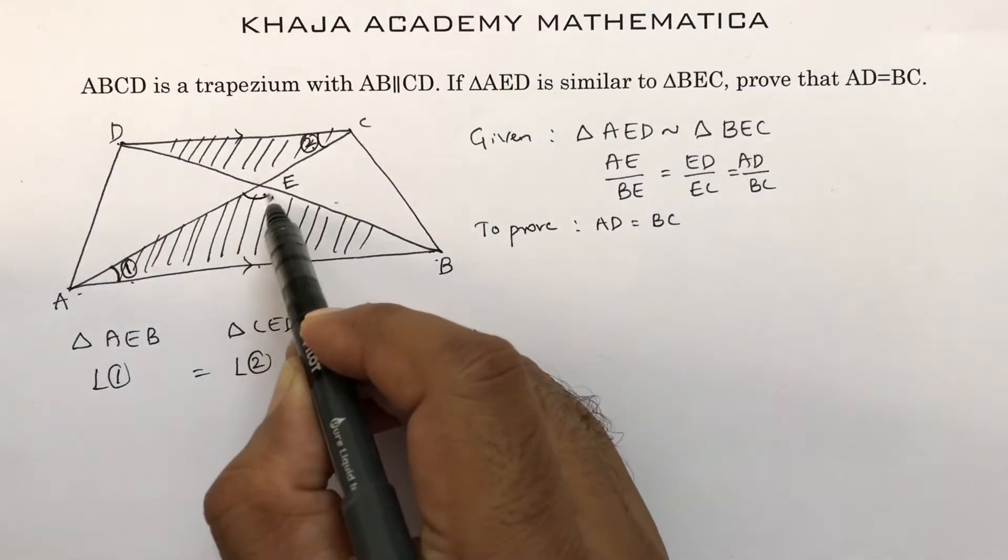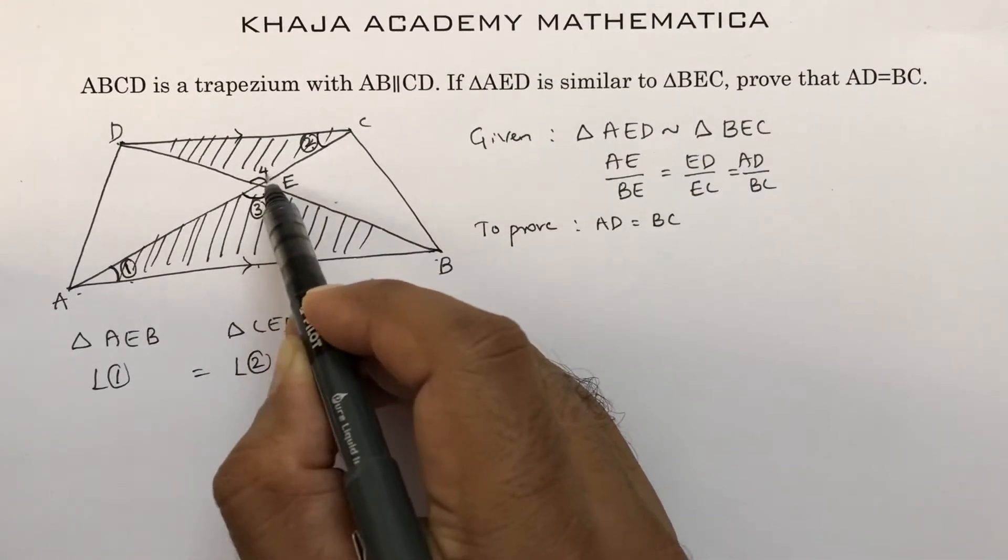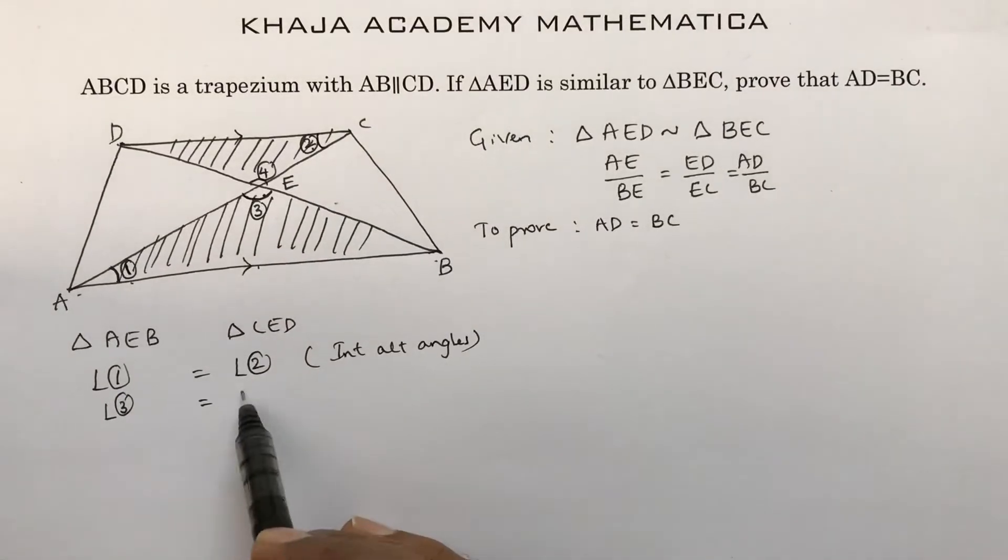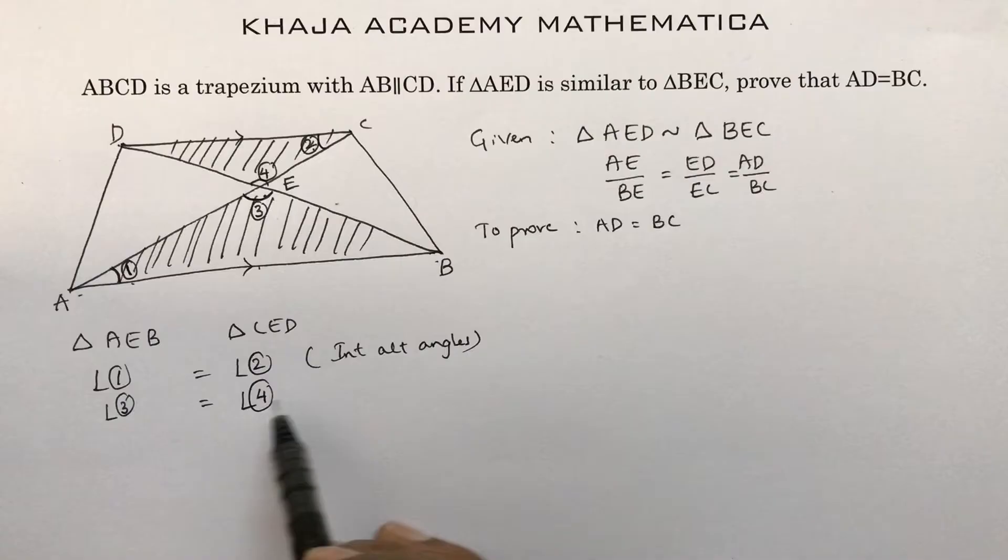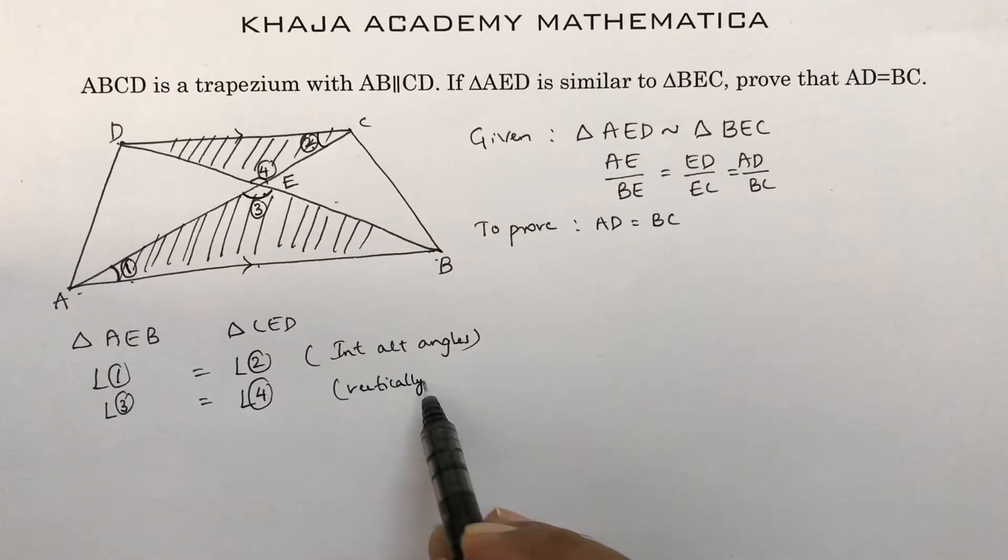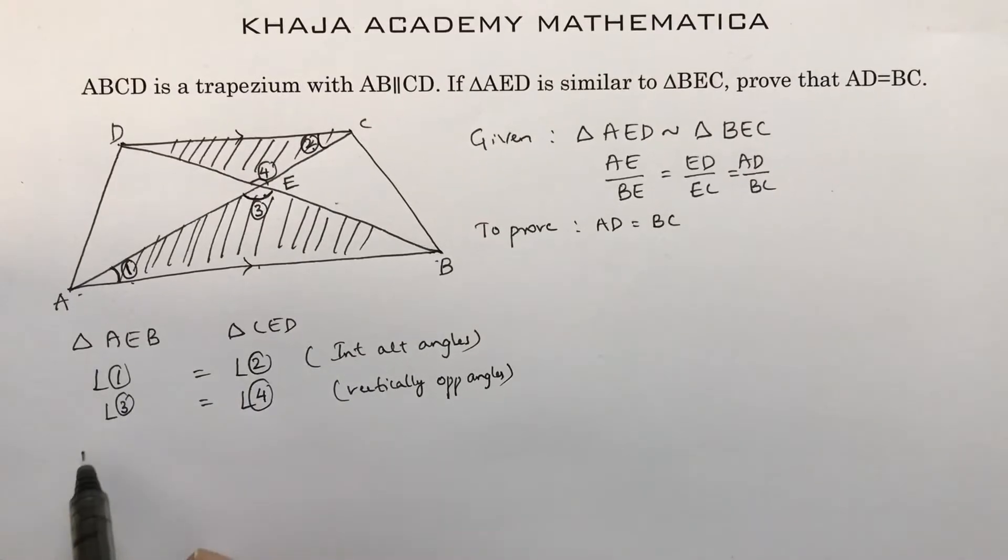Next I will take this angle 3 and this as 4. Angle 3 equals angle 4. Reason is vertically opposite angles.